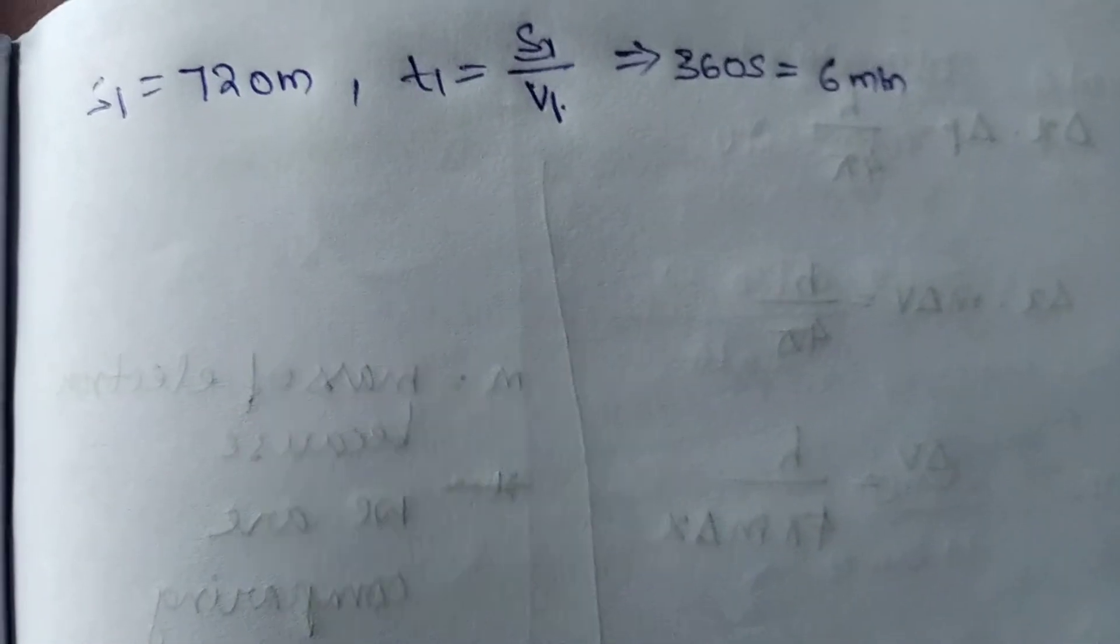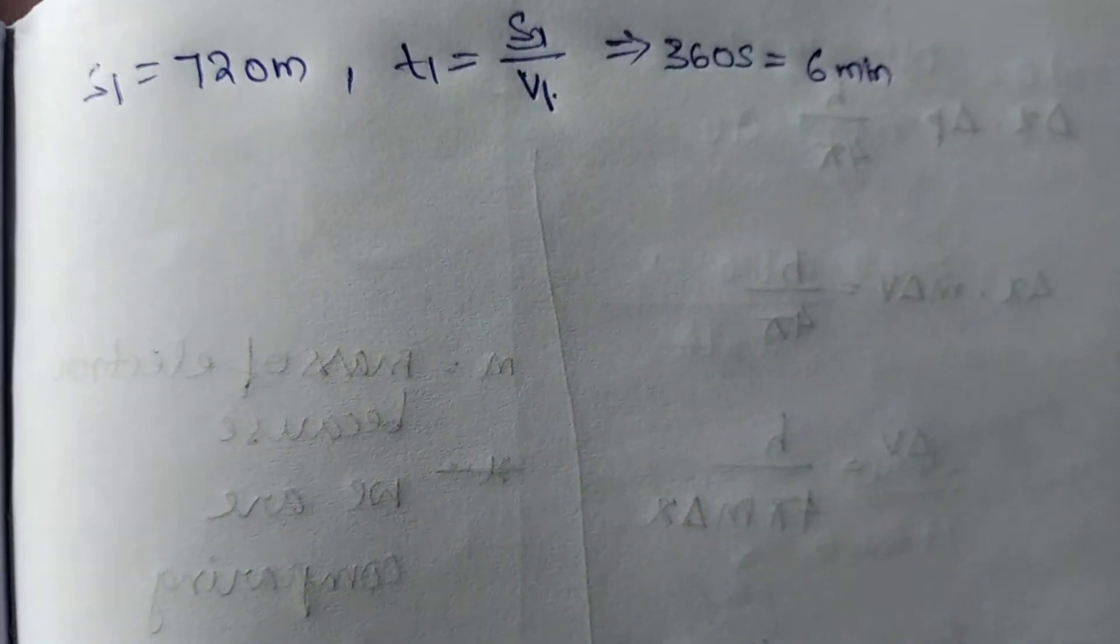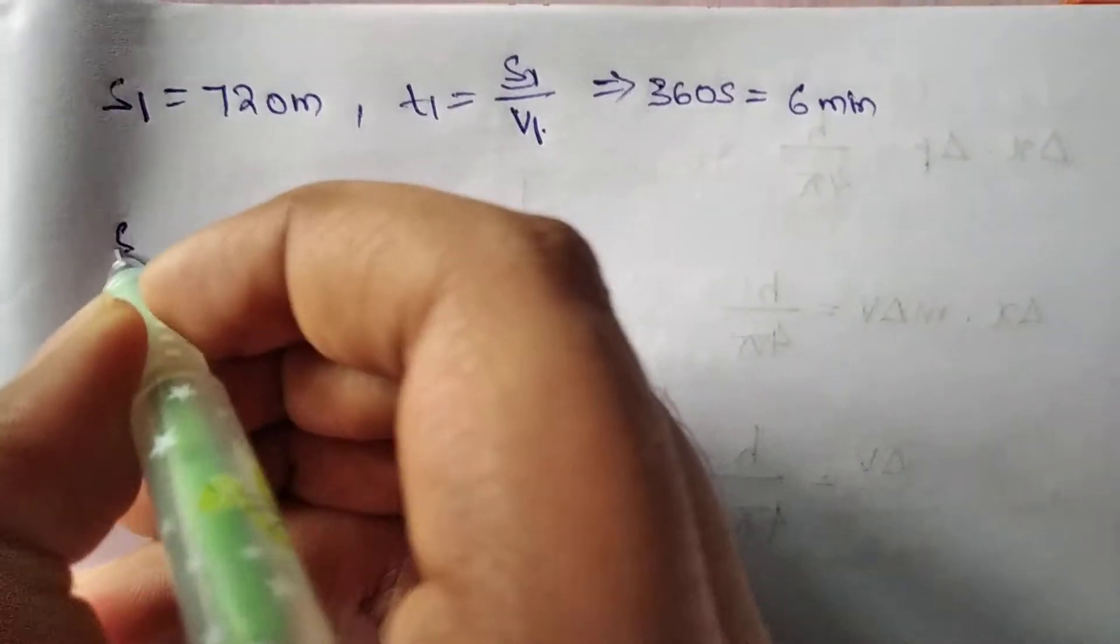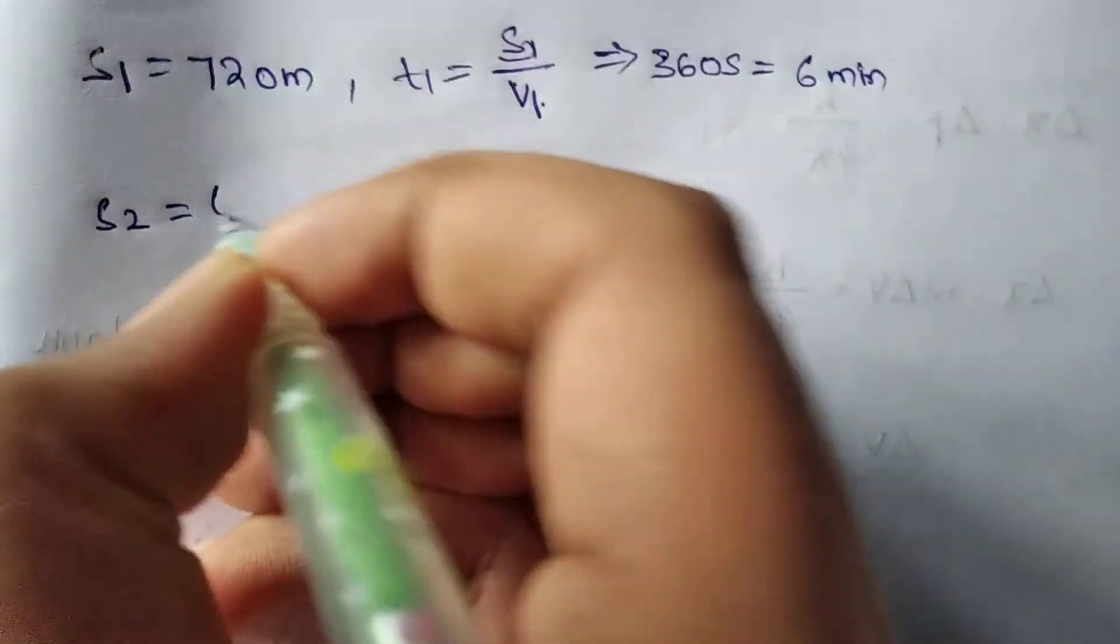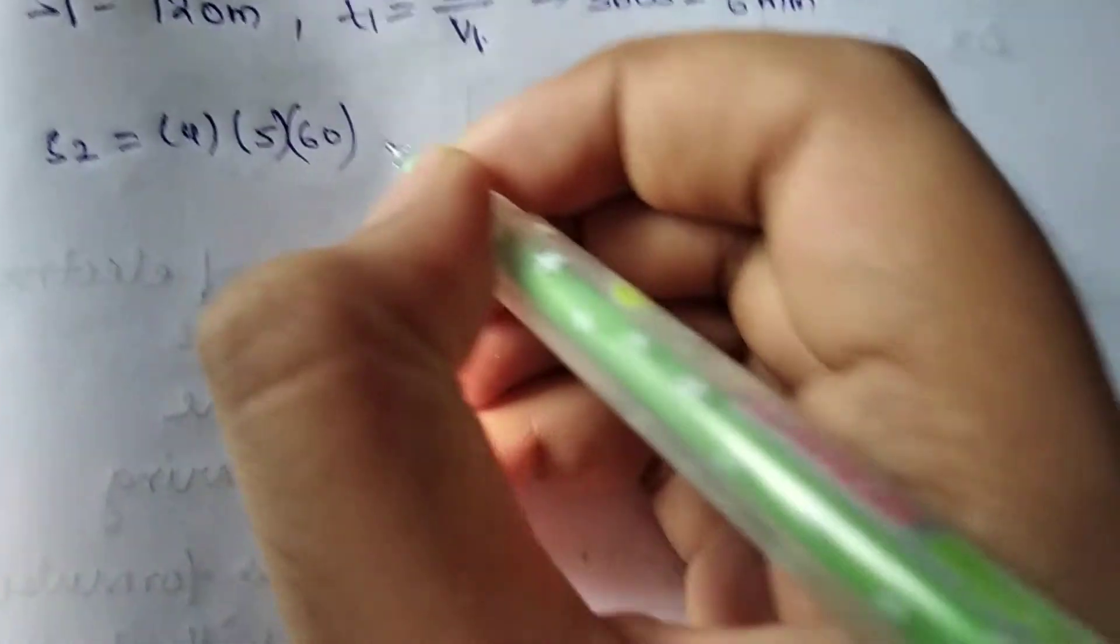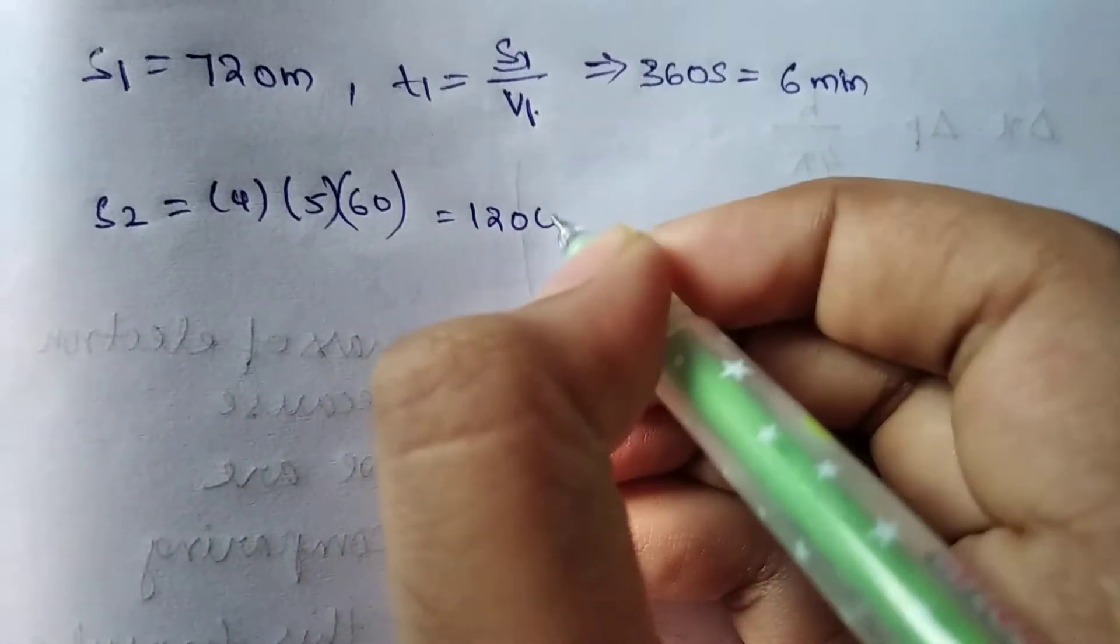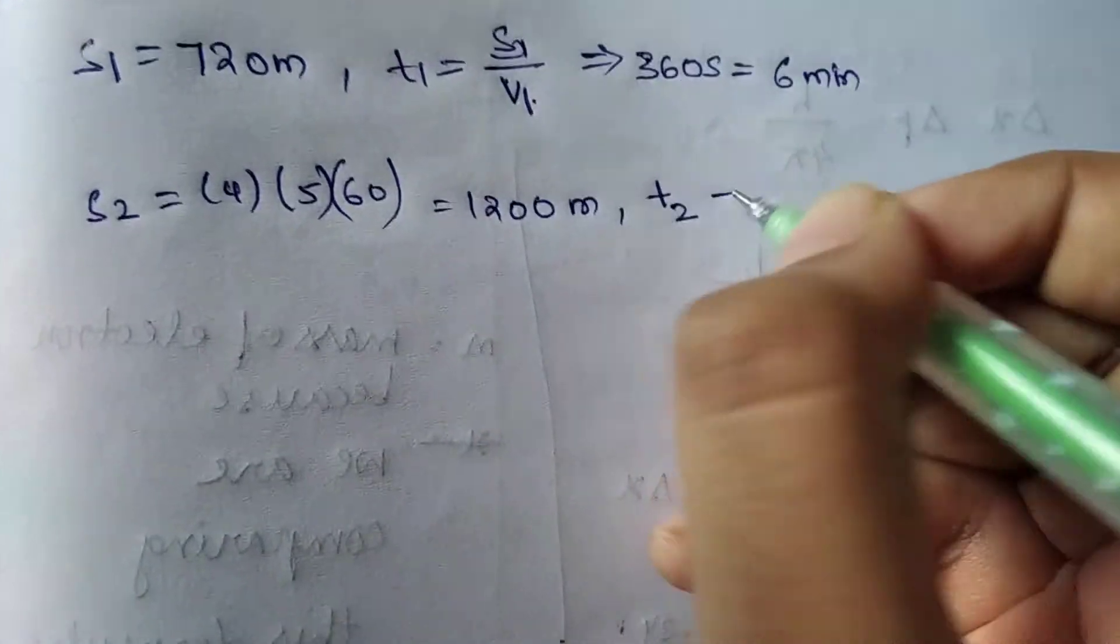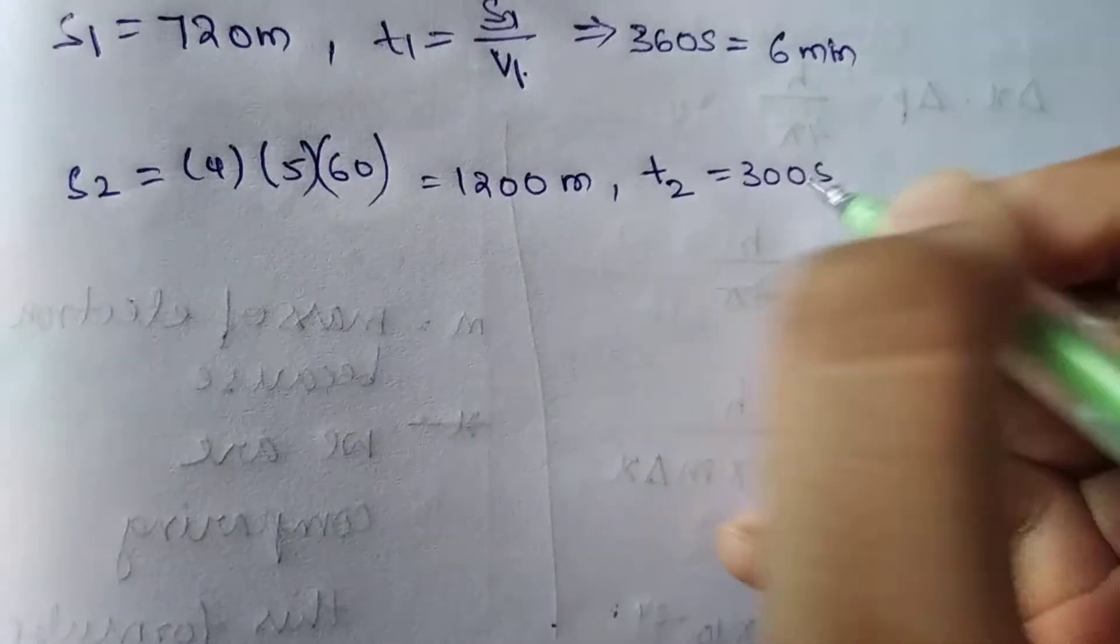Now next step is s2, which equals 4 times 5 times 60, so s2 = 1200 meters, and t2 equals 300 seconds, which means 5 minutes.